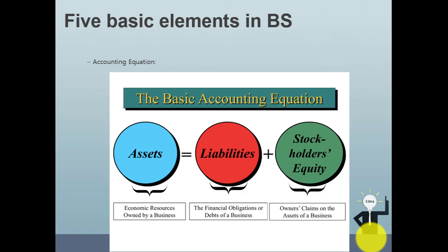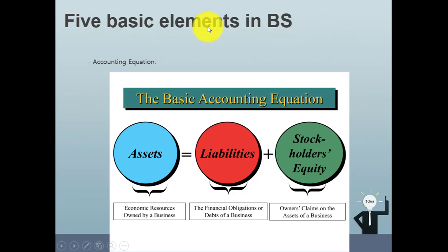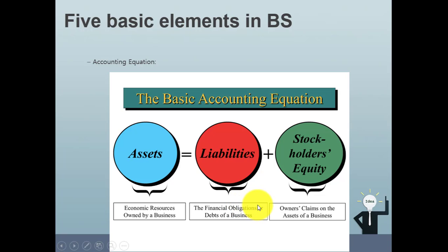When you learn accounting, you will know five elements and an equation — we call this the accounting equation. Assets will equal to liabilities plus stockholders' equity. Assets are economic resources owned by a business, such as car, land, buildings, or inventory. Liabilities is the financial obligation that the company needs to pay or has as a debt in the future.